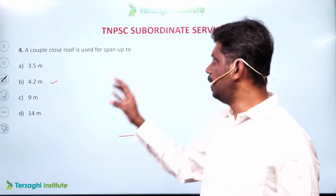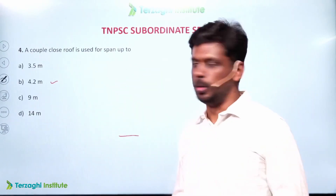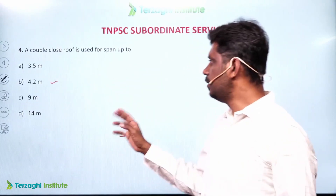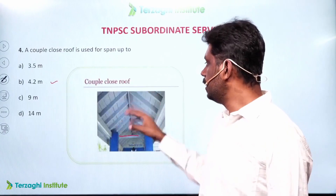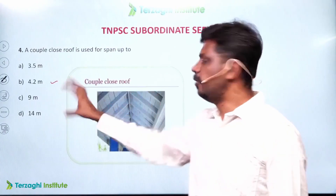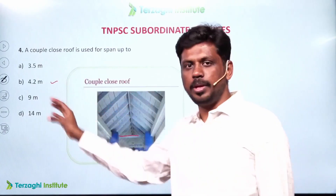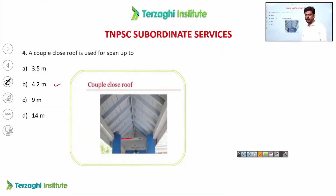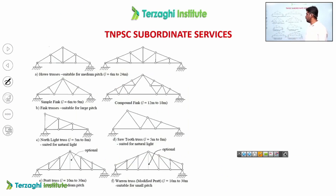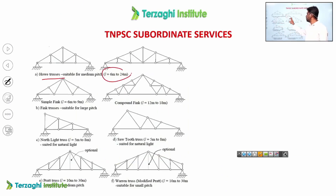A couple close roof is used for spans up to 4.2 meters. However, a couple close roof can be valid up to 4.8 meters. A whole truss is valid for spans of 6 meters to 24 meters.